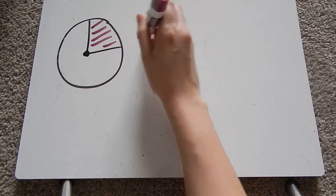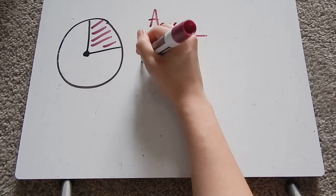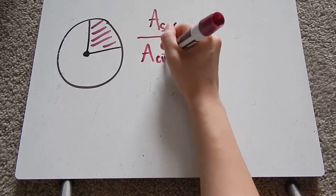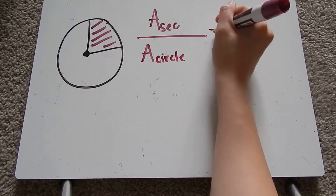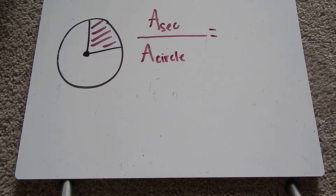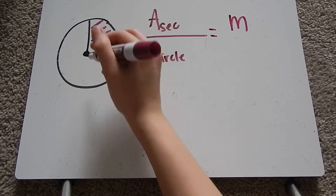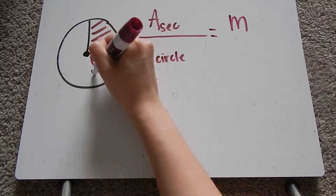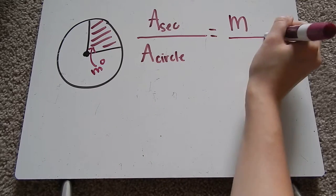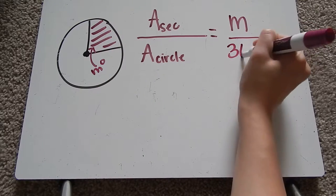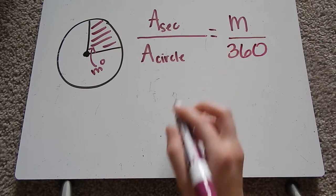So the area of this part over the area of the circle is equal to M, which remember M is the central angle measure. That's going to be here. It's going to be M degrees over the entire circle, which is 360 degrees.